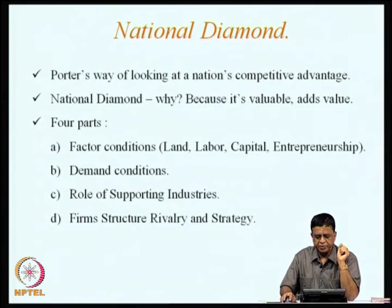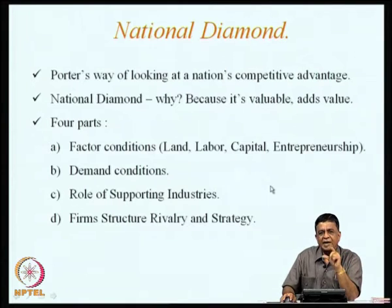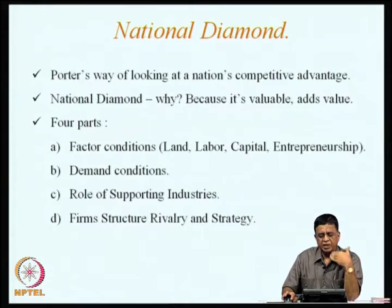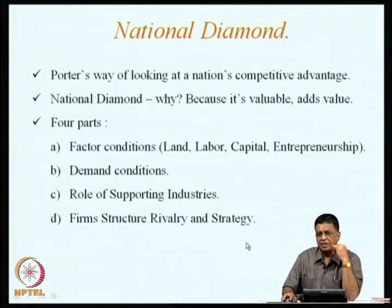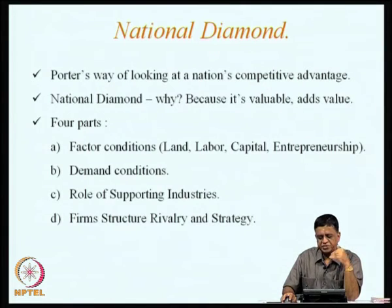What are the factors which were given out by Porter? Even when you look at the national diamond given by Porter, what you can visualize is that it adds value to a nation. We can look at this adding value in four parts: one is with respect to factor conditions — that is land, labor, capital and entrepreneurship. Then the second is the demand conditions. The third is the role of supporting industries. The fourth is the firm's structure, rivalry and strategy.